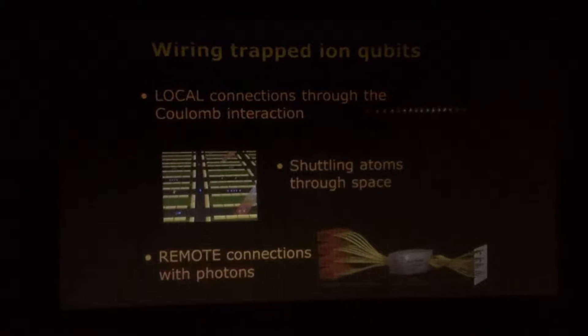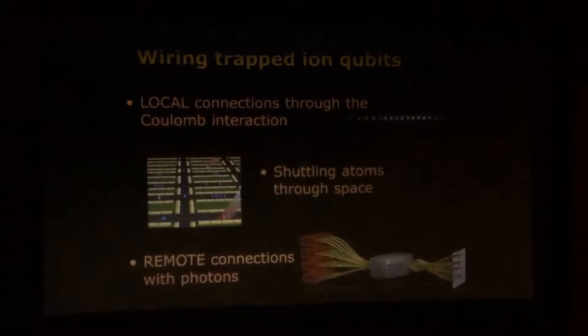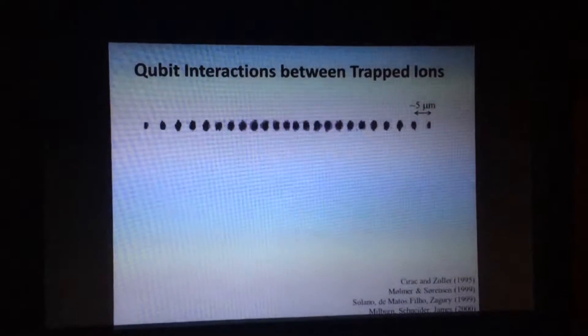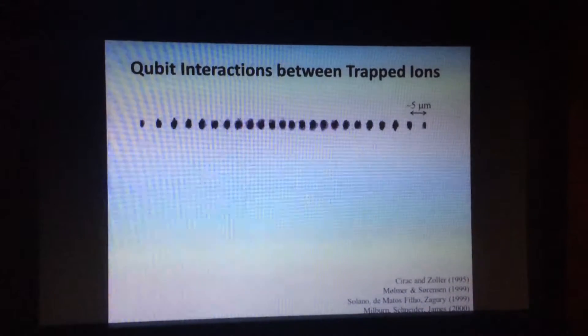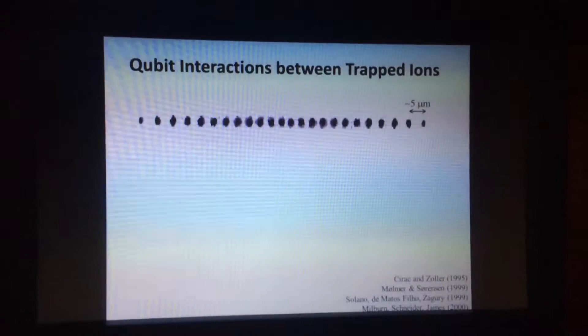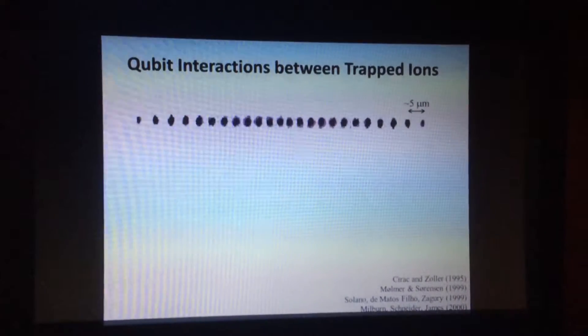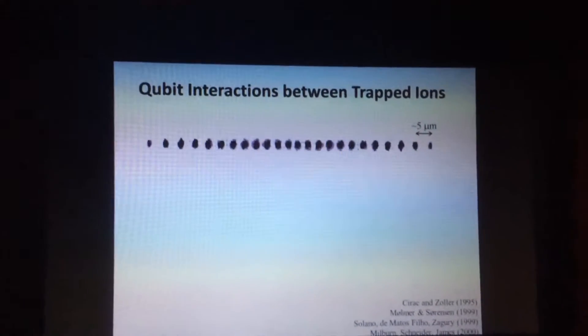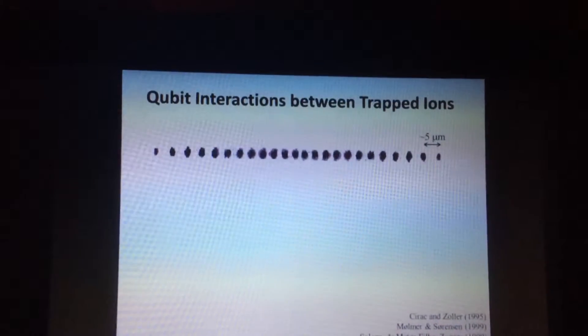Let me give you the very high-level view of how a quantum gate works involving the Coulomb interaction. We have a bunch of atoms here in a chain, and let's say we want to do an AND gate, or some type of a quantum gate, between any two of these atoms. Well, here's what we do.